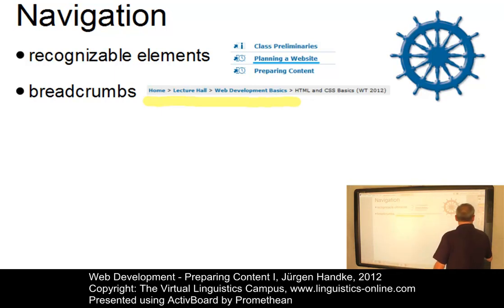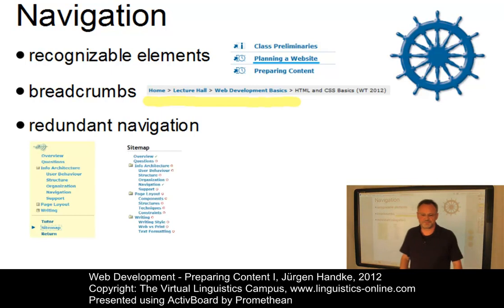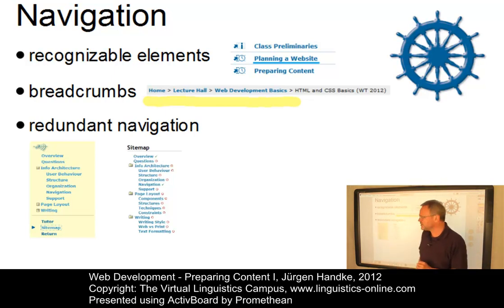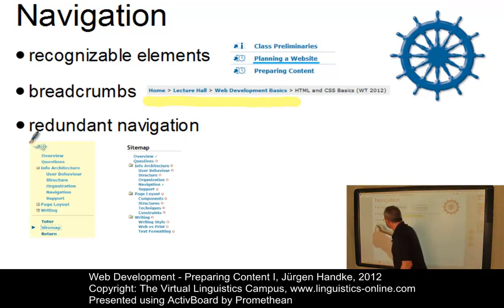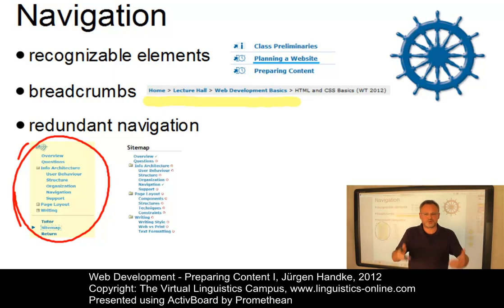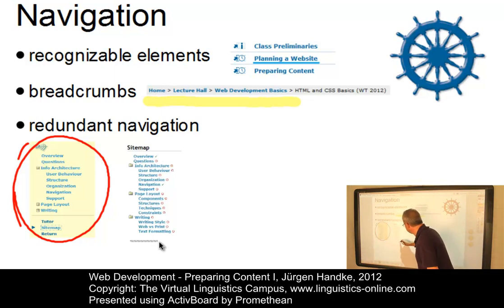This is why in many cases navigation is redundant. One type of navigation might not be enough to make information reachable, so alternative ways of navigation should be made available. Consider, for example, the menu of the virtual session on the VLC, which you always find on the left-hand side of a virtual session. Such a menu is always alternatively supported by the respective site map.